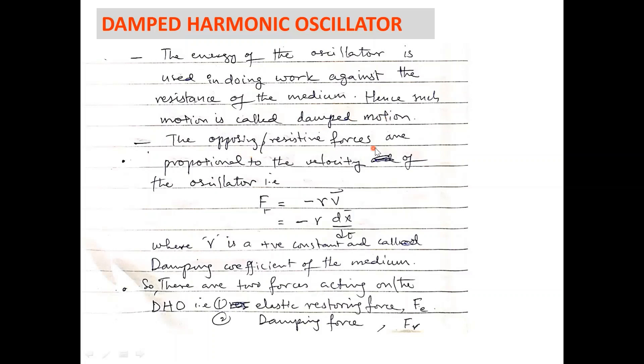The opposing or resistive forces needed to do work against the resistive medium is proportional to the velocity of the oscillator. In mathematical form we can write F equals minus gamma V, where V is the velocity, rate of change of displacement. And gamma is a positive constant called the damping coefficient of the medium.